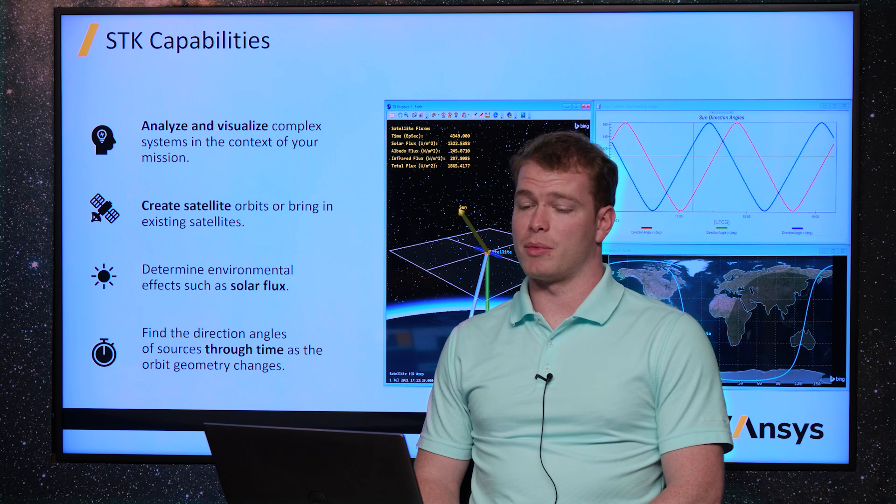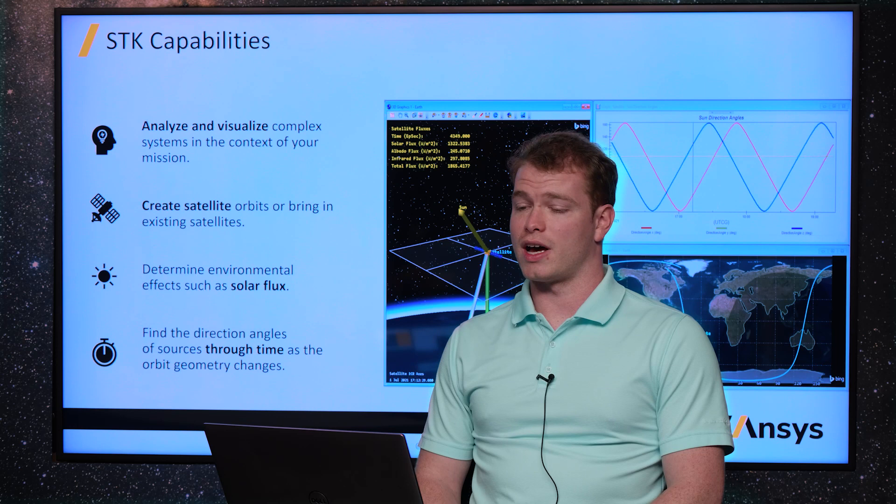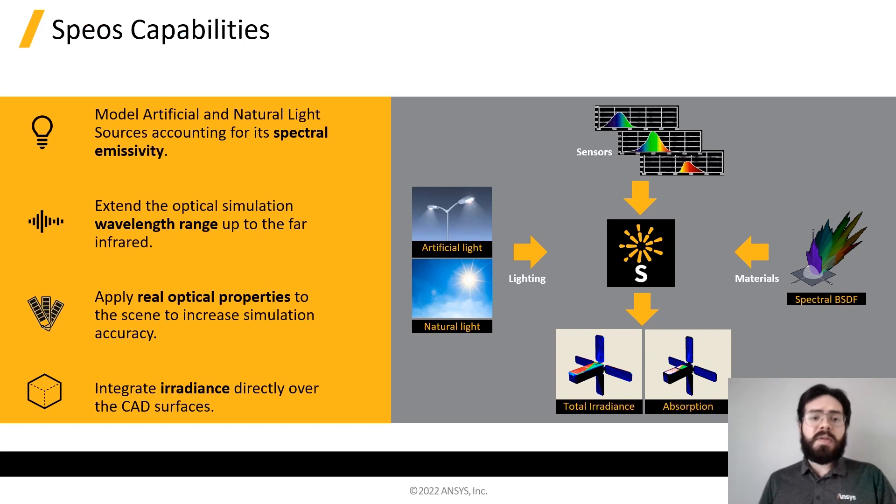We'll use STK as our mission environment, incorporate those environmental effects, such as the solar flux, Earth's albedo, and natural infrared radiation that I spoke about earlier. And we're able to analyze that change in geometry over time to understand how those different flux sources impact our satellite.